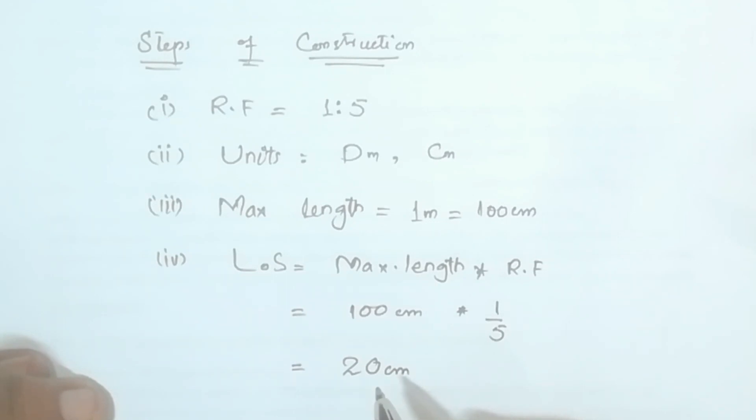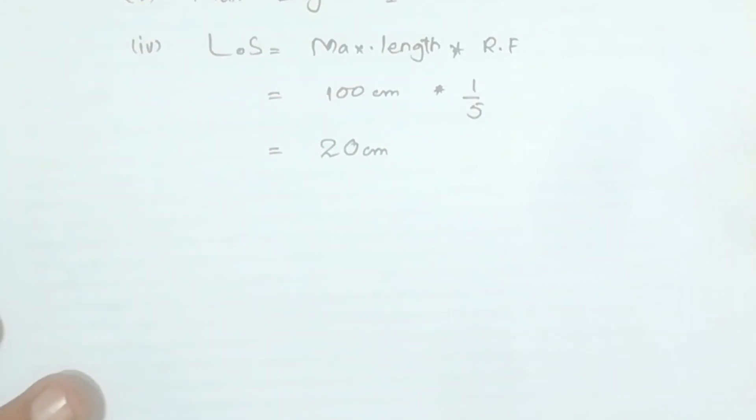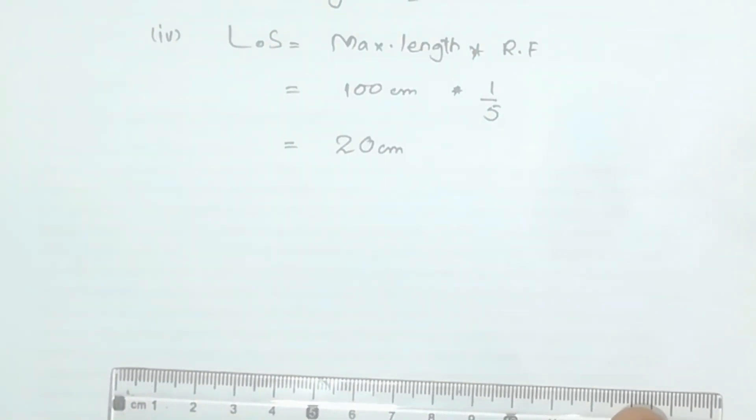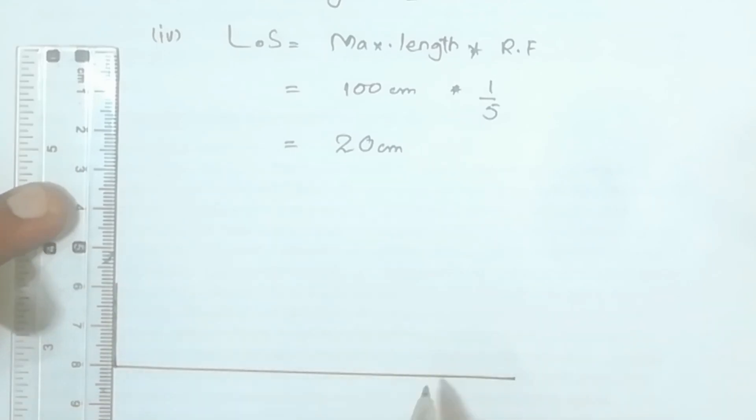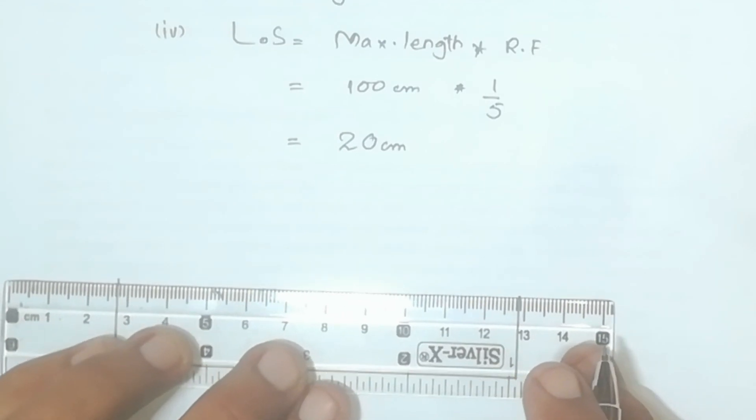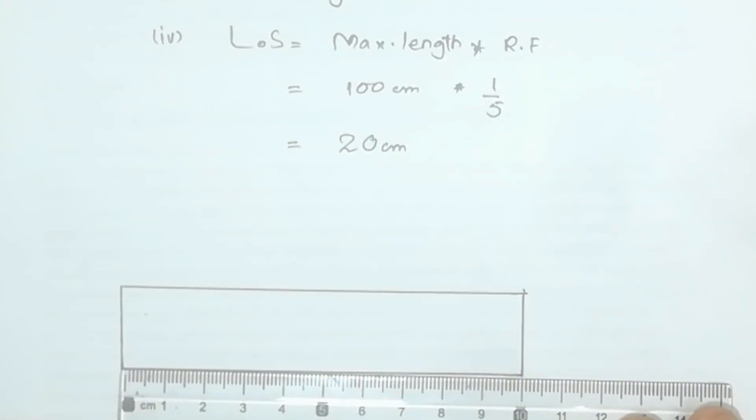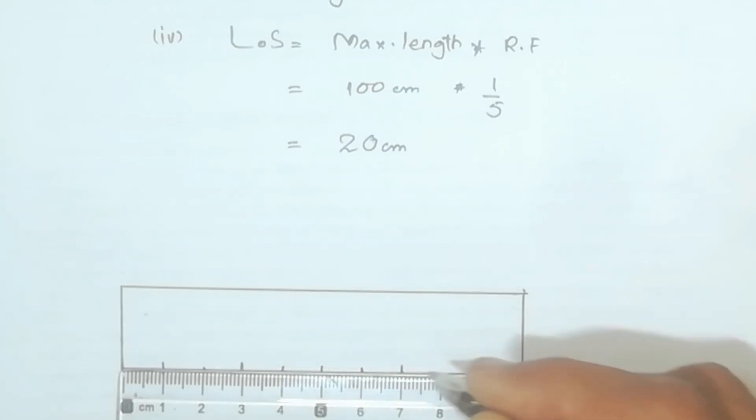So this means that the length of scale is 20 cm. I will draw it. Because I have space available in a page, I will reduce this two times so that the length of scale will come. Here is 20 so I will consider it here, here is 10 cm. So you can see it, simple problems. So this is 0 cm, this is 10 cm.